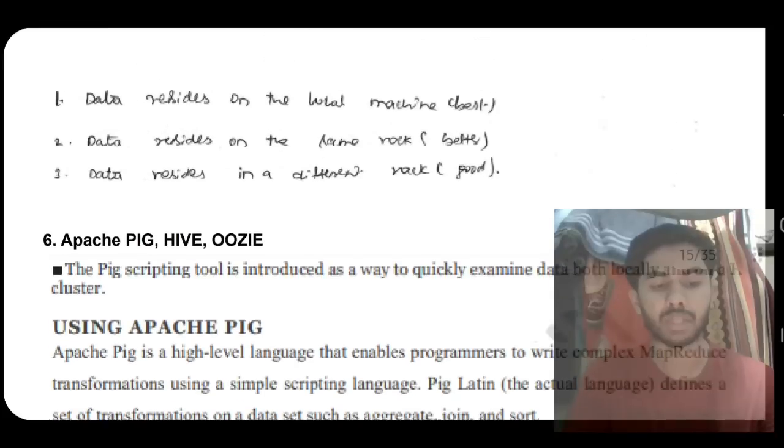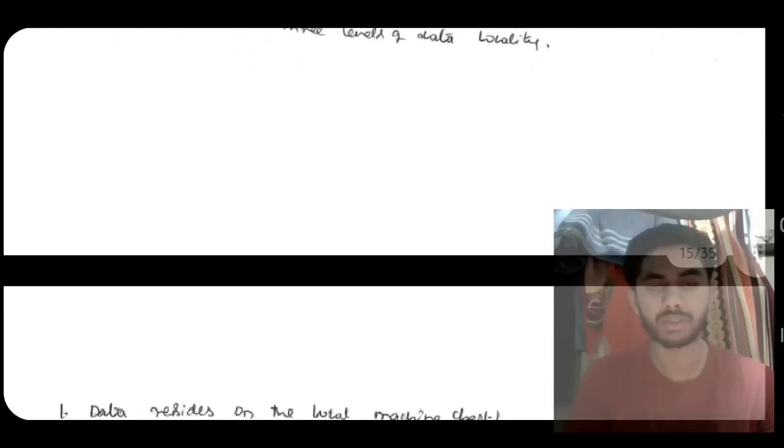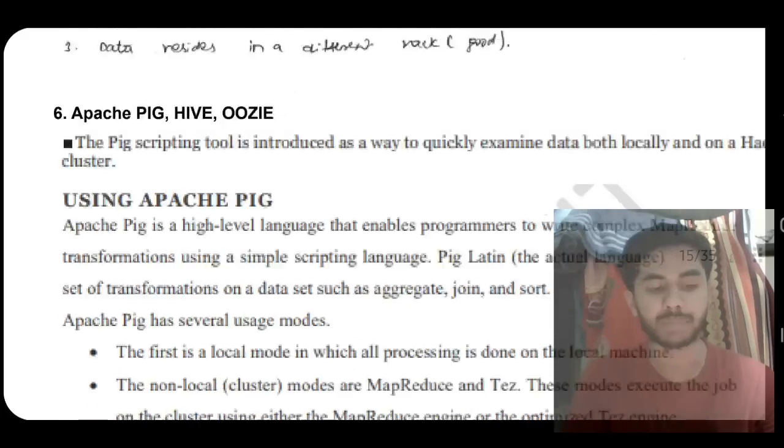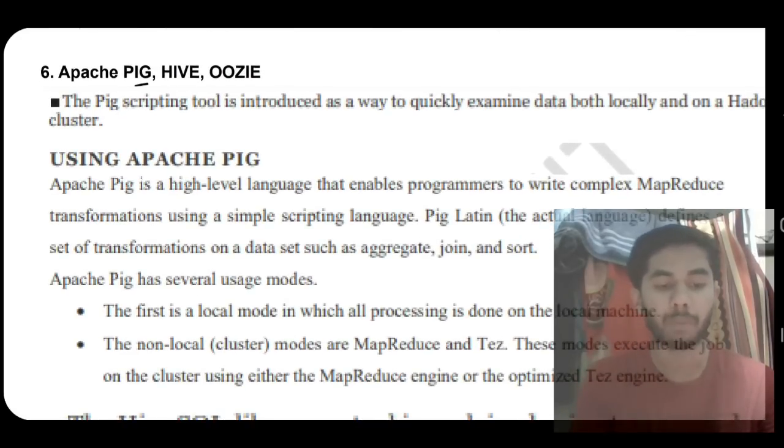The three levels are: data resides on the local machine, this is the best way; second, it resides on the same rack; and third, it resides in a different rack. That was about rack awareness, you just have to elaborate it using some examples.